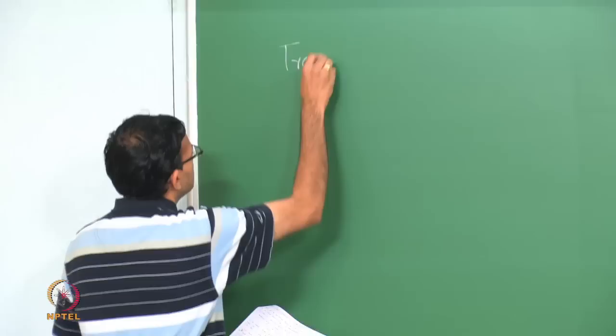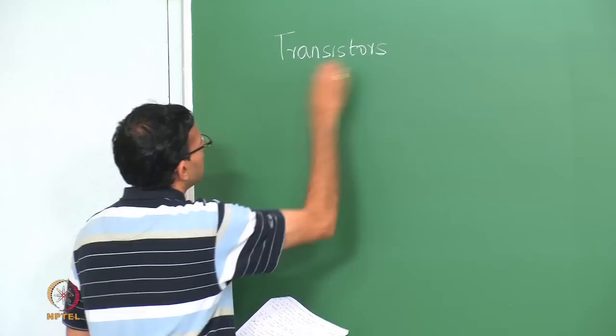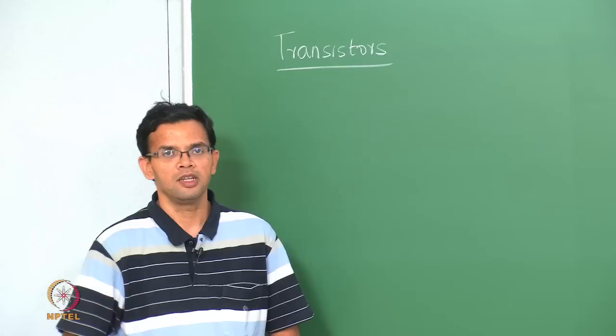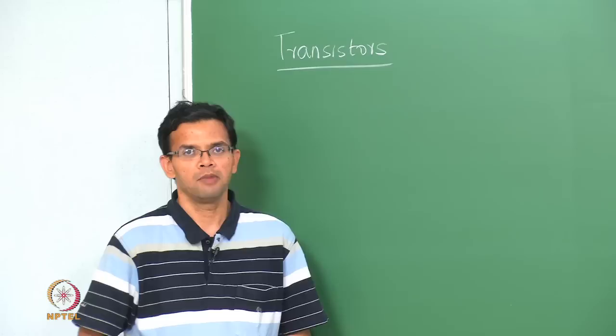Let us start with a brief review of last class. Last class we started looking at transistors. Transistors are 3-terminal, 2-junction devices.